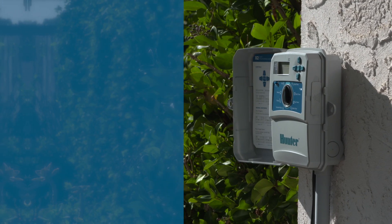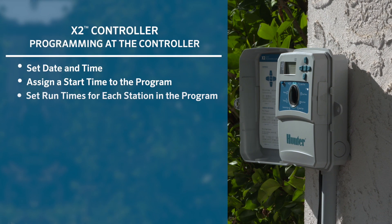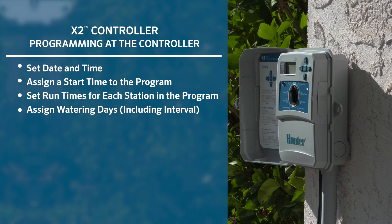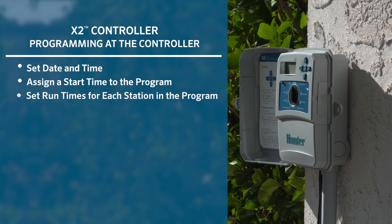This is an overview of basic offline programming with your X2 controller. Throughout this video, we will cover basic programming steps required for an irrigation program. We will show you how to set the date and time, how to assign a start time to the program, how to set run times for each station in the program, and how to assign watering days.